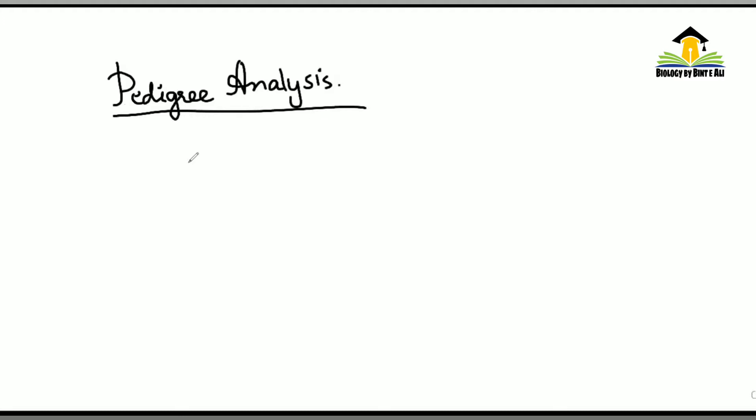Pedigree analysis ka matlab ye hota hai ke hum kisi bhi family ka koi character ya disease ho, uski history nikaalte hain aur usko tabular representation dete hain jisko pedigree analysis kaha jata hai. Pedigree analysis mein different symbols use hote hain. Is video mein wahi symbols sikhenge ke kis tarah ki symbols hote hain aur unko kya represent karte hain.